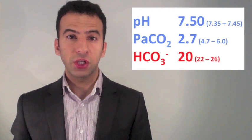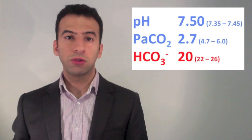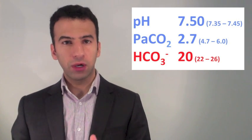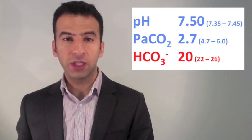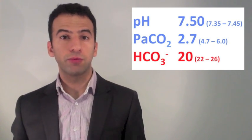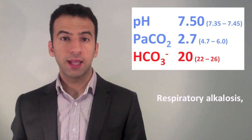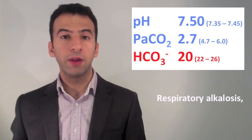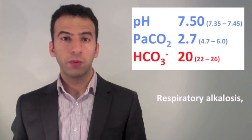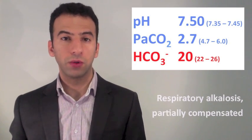In this example, the pH is 7.50 — alkalemia. The CO2 is low, so that's less acid, alkalinising, moving in the same direction as the pH in Step 1. Therefore this is a respiratory problem, a respiratory alkalosis. In Step 3, the bicarbonate is moving in the opposite direction since it is low, which means there is partial compensation of this respiratory alkalosis.